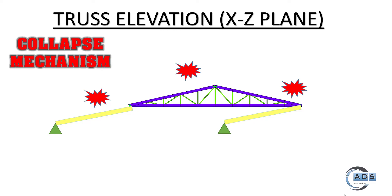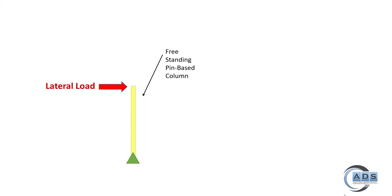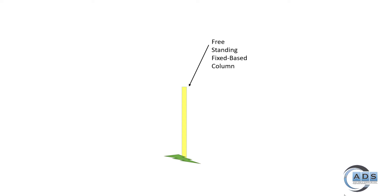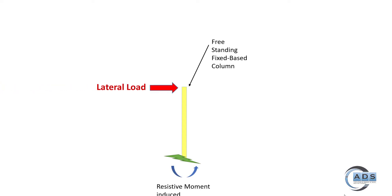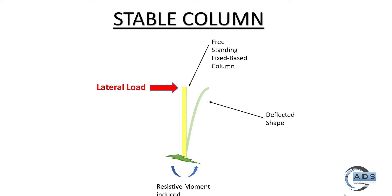Let's have a freestanding pin-based column. If any lateral load is applied to the free end of this column, the resistive moment can't be induced at the base, so the column will collapse. This is known as an unstable column. On the other hand, for a freestanding fixed-base column, if lateral load is applied to its free end, a resistive moment is induced at the base, and the column will deflect — this is known as the stable column.